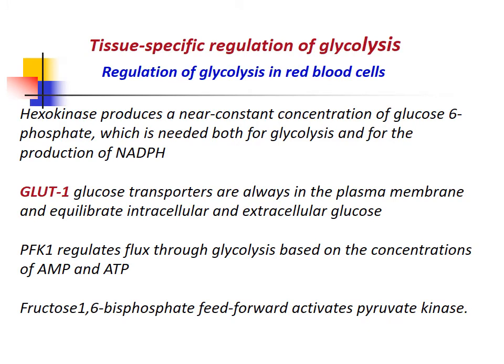Regulation of glycolysis in red blood cells: Hexokinase produces a near-constant concentration of glucose-6-phosphate needed for both glycolysis and NADPH production. Glucose transporter 1 is always in the plasma membrane and equilibrates intracellular and extracellular glucose. PFK1 regulates flux through glycolysis based on AMP and ATP concentrations — when ATP is high, PFK1 is inhibited; when AMP is high, PFK1 is activated. Fructose-1,6-bisphosphate feed-forward activates pyruvate kinase, which is also inhibited when ATP levels increase.